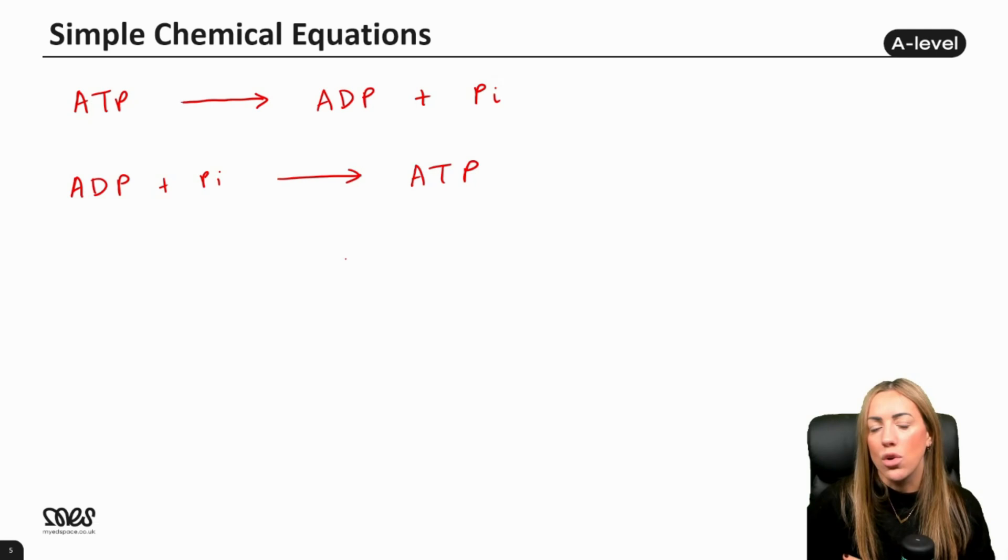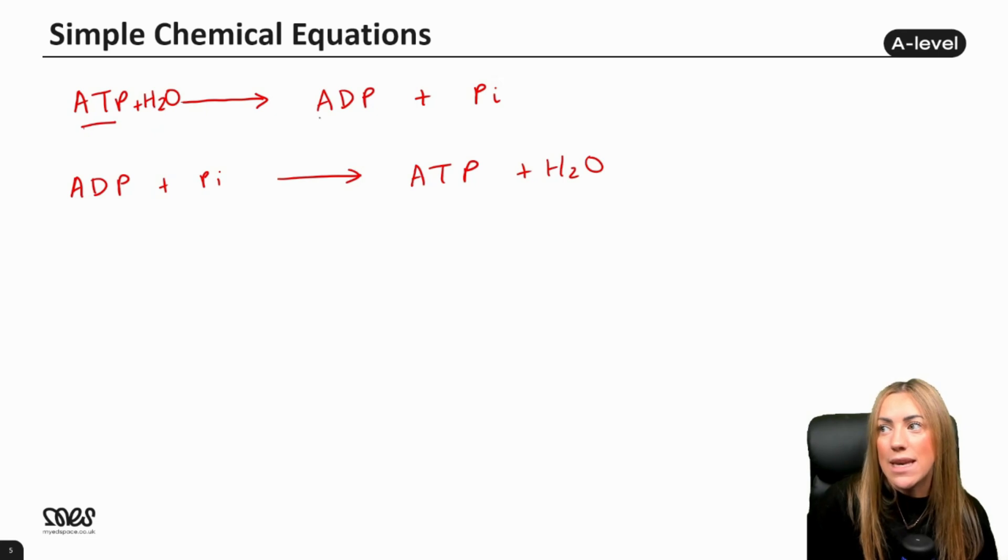You could show the water though, couldn't you? Because if we're going to hydrolyze ATP, hydrolysis requires the addition of water, so we could put the water in there which is going to hydrolyze that bond and break it down into ADP and Pi. If we're going to make ATP, we're making a bond, so this is a condensation reaction that would remove water, so we'd also see water formed as one of the products. Quite often in the exam you don't need to show the water, it just asks you for the simple equation.